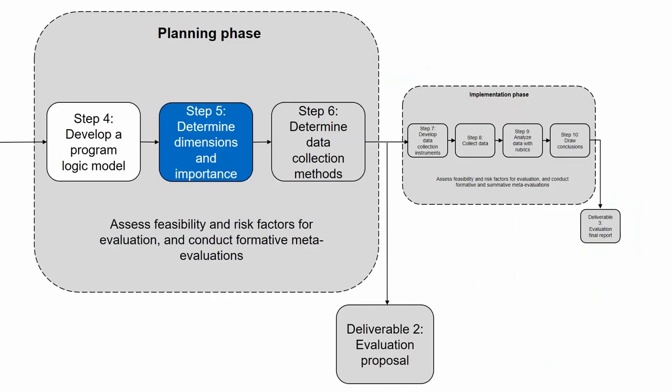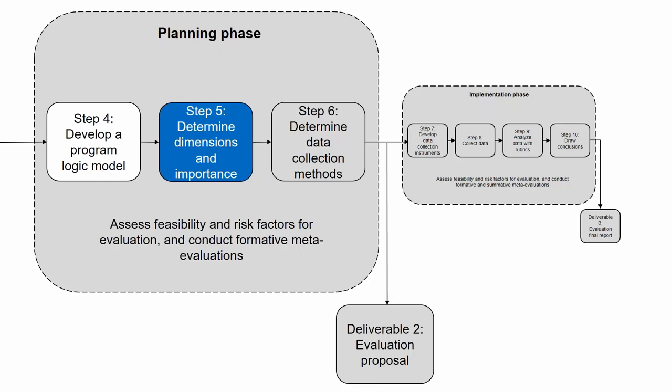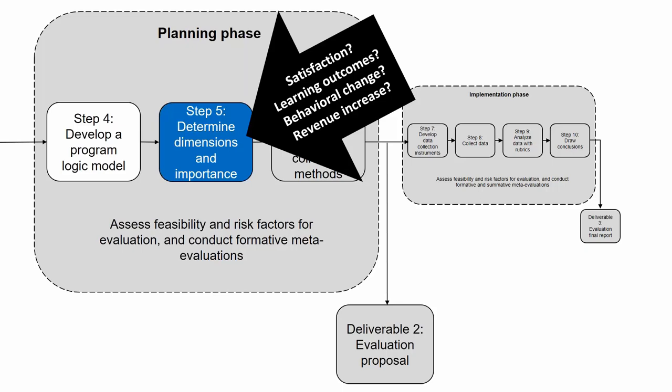Sometimes your dimensions may look just like the four levels of Kirkpatrick's framework: satisfaction, learning outcomes, behavioral change, and revenue increase. That's okay — those are preset dimensions, which is convenient. But in other cases, it's not ideal because your program is not a training program and those dimensions don't always work. Also, the framework itself doesn't tell you exactly what to evaluate. So go back to your program logic model and pick out exactly what dimensions to evaluate — that's the advantage of having the model right there.